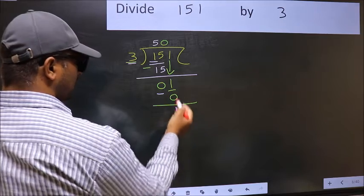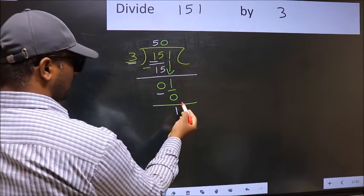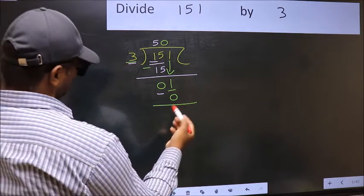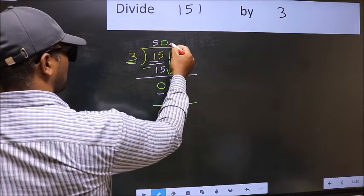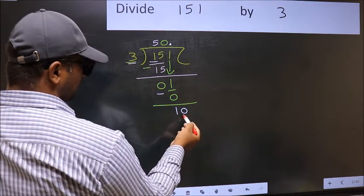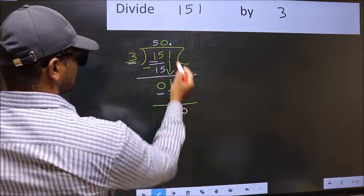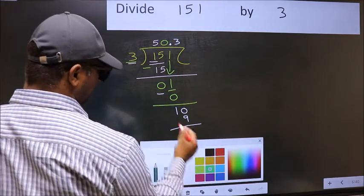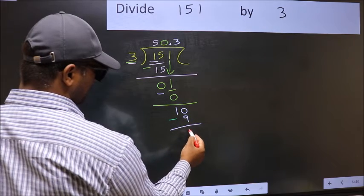Over here, we did not bring any number down. And 1 is smaller than 3. So, now you can put a dot and take 0. So, 10. A number close to 10 in 3 table is, 3 times 3 is 9. Now you subtract. 10 minus 9, 1.